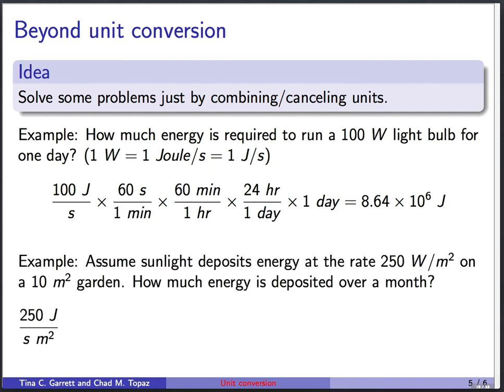Now a second example: assume sunlight deposits energy at 250 watts per square meter on a 10 square meter garden. How much energy is deposited over a month? So what you should be imagining here is here's a garden. It's 10 square meters in area, and the sun is up here, and the sun is shining down on it. That deposits some energy, and we want to know how much energy over an entire month.